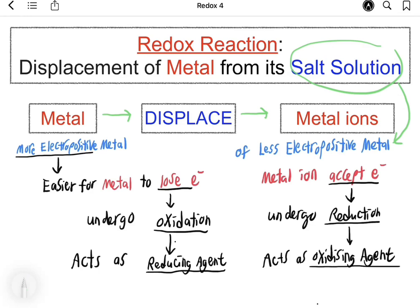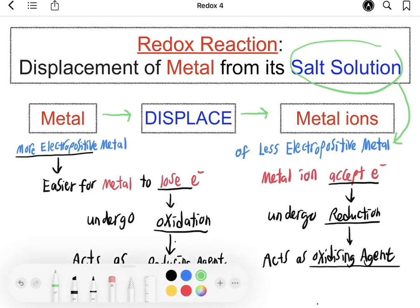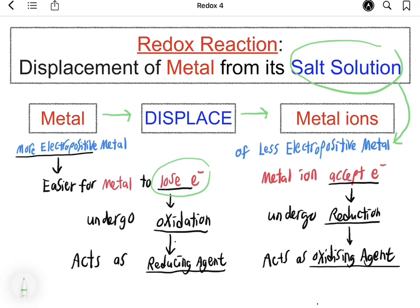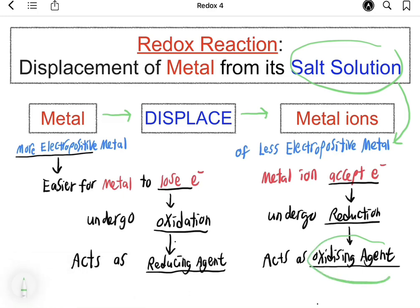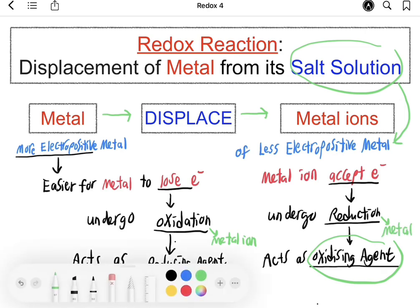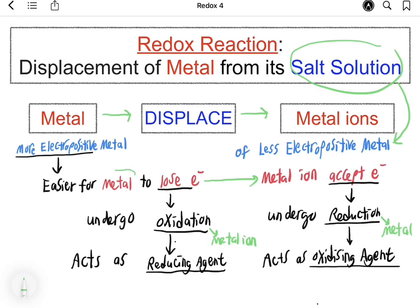For the more electropositive metal, it is easier for the metal to lose electrons. By losing electrons, the metal undergoes oxidation and acts as a reducing agent. The metal ion acts as an oxidizing agent because it accepts electrons to undergo reduction. The metal will be oxidized into a metal ion, and the metal ion will be reduced to metal. In a displacement reaction of metal, there is a transfer of electrons from the metal to the metal ion.